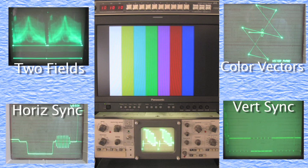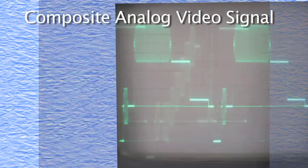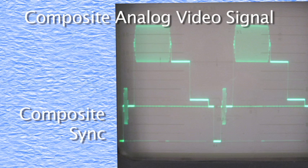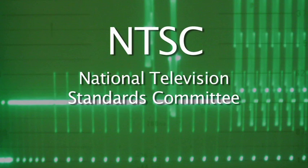Sync within a composite NTSC video signal refers to the pulses and sine wave bursts that allow for the proper alignment of the visual information elements that make up the picture you see on a TV screen. This tutorial will introduce you to the various elements that make up the composite sync within the NTSC analog video signal.